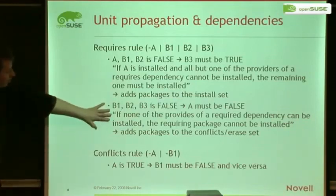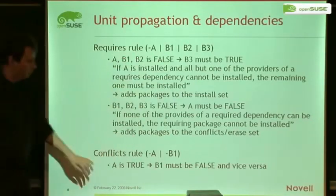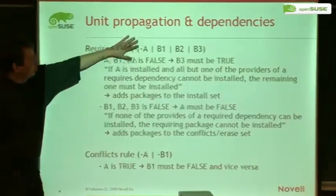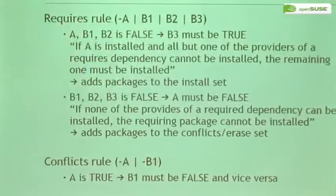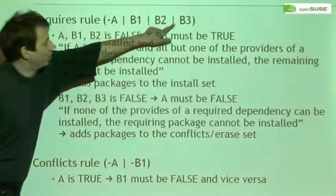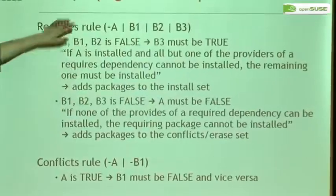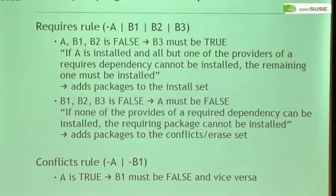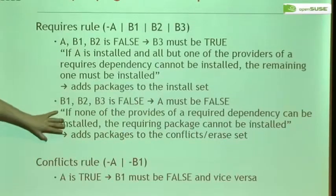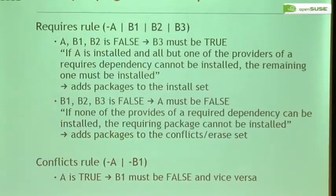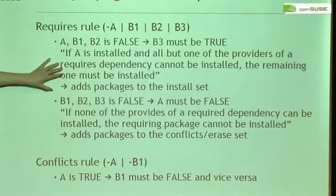The other case is if A is still undecided and all providers are false. If all providers of the dependency can't be installed, then A also can't be installed — this is normally what other solvers don't do. This adds packages to the set of conflicts or uninstallable packages. This rule says: if those are forbidden for installation, then A must also be forbidden. This is very useful because it grows the set of packages known to be uninstallable.